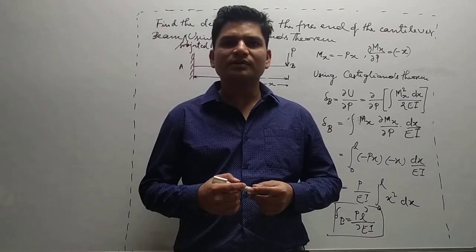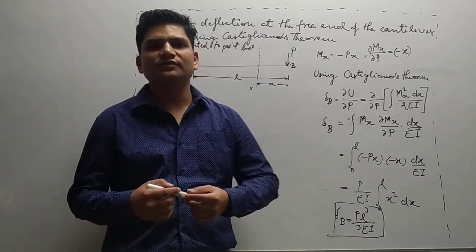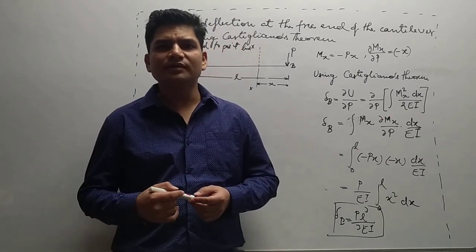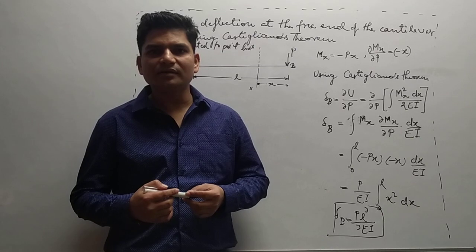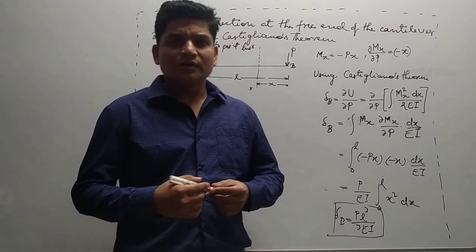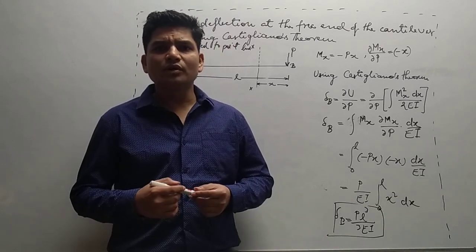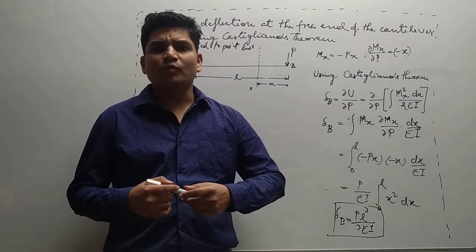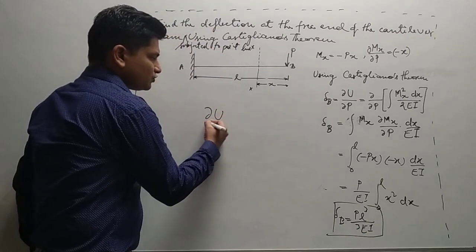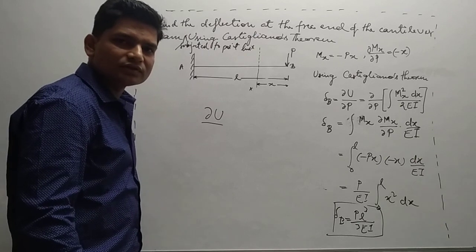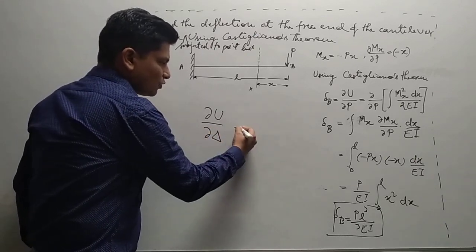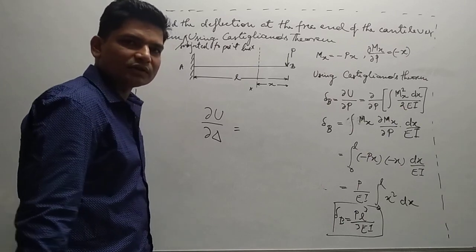There are two Castigliano's theorems. The first Castigliano's theorem states that if any structure, the material of which is linearly elastic, the supports are unyielding, and the temperature is constant, then the partial derivative of total strain energy with respect to the deflection component is equal to the force at that point in the direction of the deflection.